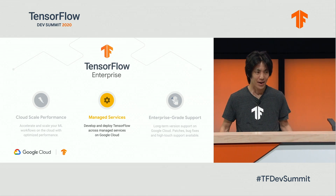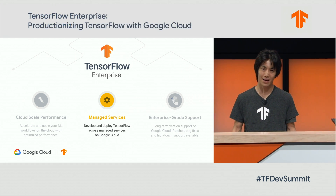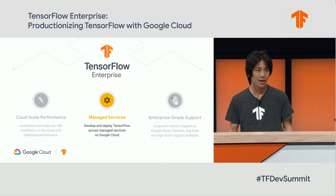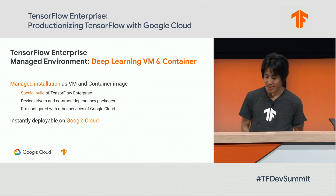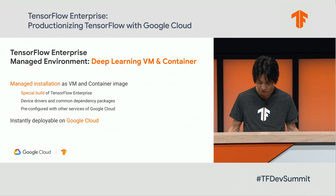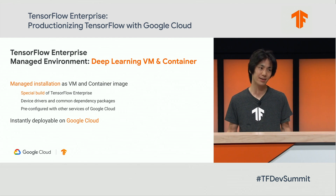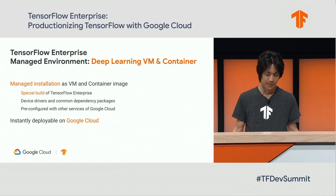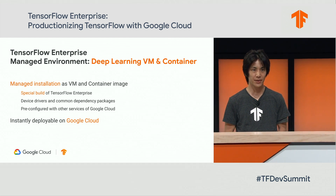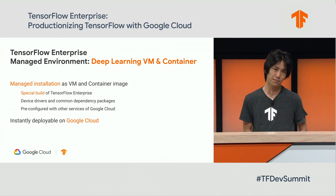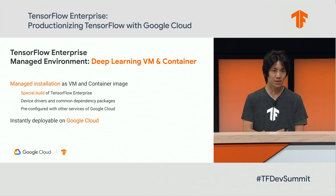Now that you have some idea about what kind of optimization we were able to make to TensorFlow specifically for Google Cloud, let's see how you actually get it and take benefit of it. We do this through managed services. We deliver TensorFlow Enterprise through a managed environment, which we call deep learning virtual machine images and container images, where all the environment is pre-managed and pre-configured on top of standard Linux distributions. Most importantly, it has TensorFlow Enterprise build pre-installed together with all the dependencies, including device drivers, dependency Python packages with correct version combinations, as well as configuration to other services in Google Cloud.